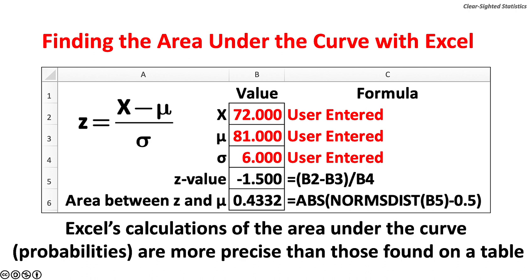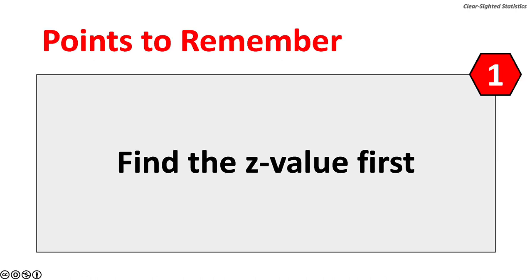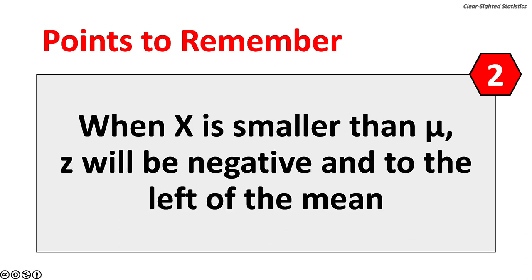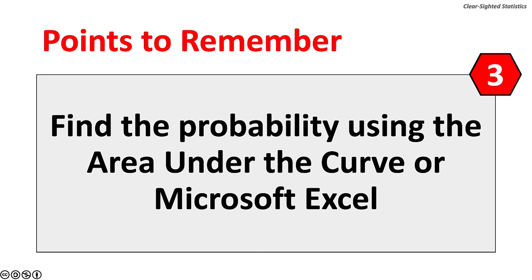You can also find the area under the curve using Excel. Excel's calculations of probability are more precise than those found on the area under the curve table. Excel calculates area under the curve probabilities starting from the extreme left side of the curve. Points to remember: first, find the z-value first; second, when the random value x is smaller than the population mean mu, z will be negative and on the left of the mean; third, find the probability using the area under the curve table or a computer app like Microsoft Excel.